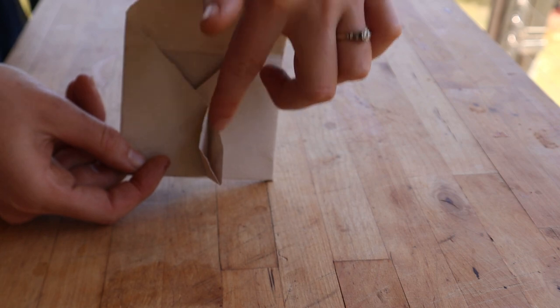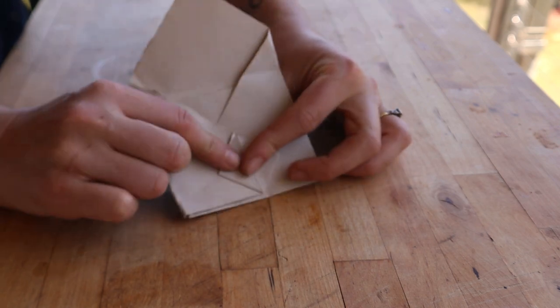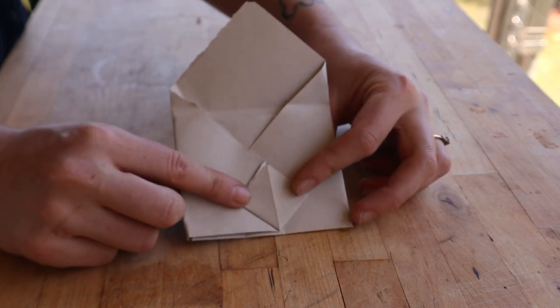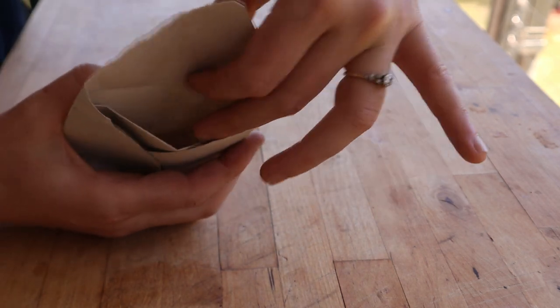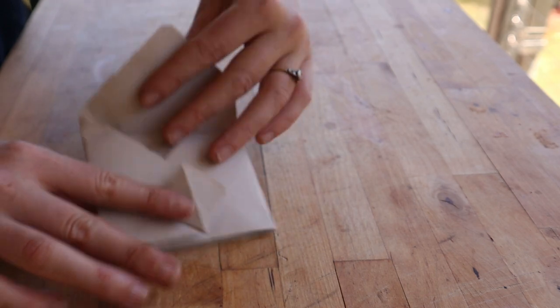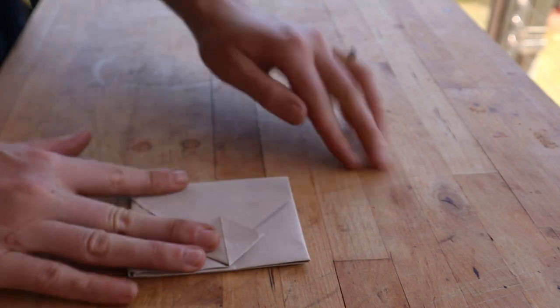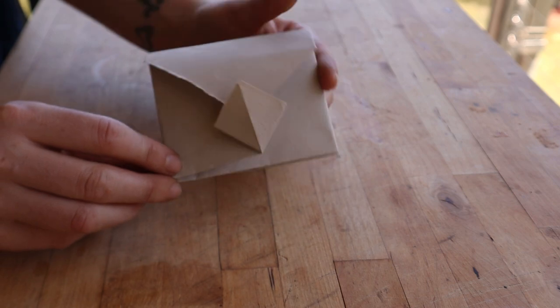Poke your finger through, this creates the little tab that holds the envelope down. Put your seeds into here and then you fold over the top and tuck it in to have your little envelope.